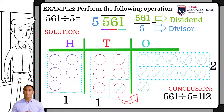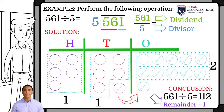As a result, we conclude that 561 divided by 5 equals 112. Since there was one element left over in the ones, the remainder is said to be one.